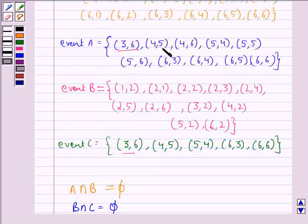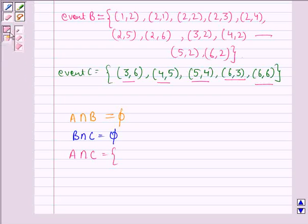And if we consider A intersection C, we see that (3,6) is common in both of them, (4,5) is common, (5,4) is common, (6,3) is common and (6,6) is common. So, we see that A intersection C is not equal to empty set.